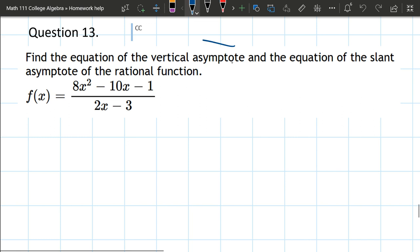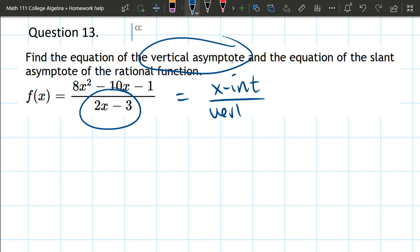So we'll start with the vertical asymptote. Those are pretty easy to find. They're always going to be in the denominator. You set it equal to 0. So just remember you're looking at x-intercepts in the numerator and vertical asymptotes in the denominator. So we're intentionally dividing by 0.